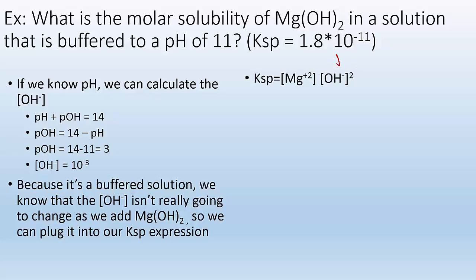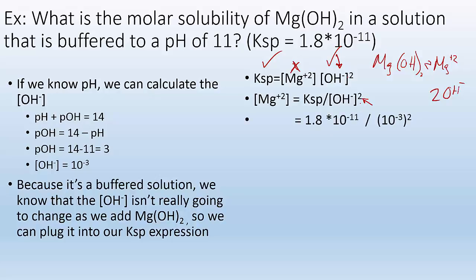So we can plug it into our Ksp expression. Again, it's a buffer, and the pH is going to be constant or relatively constant. So I know that the OH- isn't going to change. So magnesium plus 2 ion is what we're trying to solve for because we want to know the molar solubility, and that's going to be our X, right? So we know this number. We know this number. This is our unknown. Solve for that. It's going to be the Ksp divided by OH- squared. Don't forget that squared, right? Because Mg(OH)2 is breaking up into Mg+2 and 2 OH minuses. So that hydroxide has got to be squared. So then I plug and chug, Ksp, plug it in, 10 to the minus 3 squared, and I get X equals 1.8 times 10 to the minus 5. And my concentration is going to be molar.